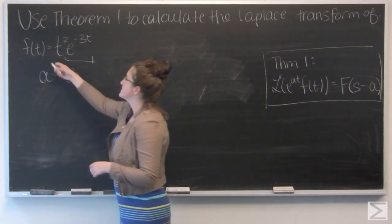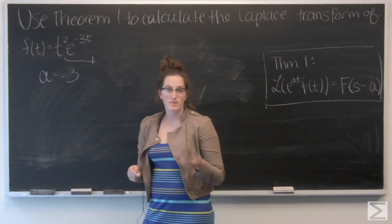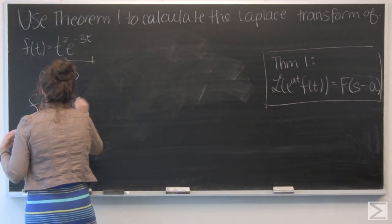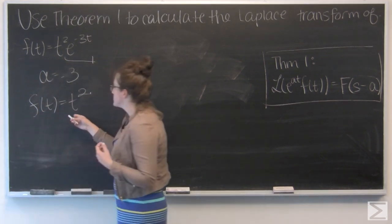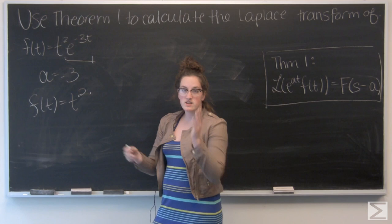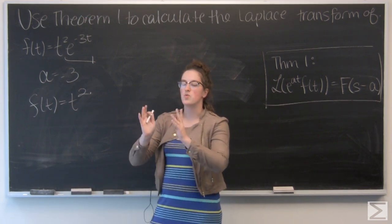And the part that's left, t squared, is going to be my f of t for theorem 1. So I want to take the Laplace transform of t squared and then shift it 3 units to the left.